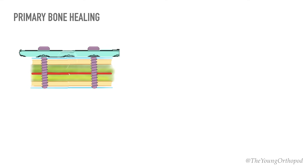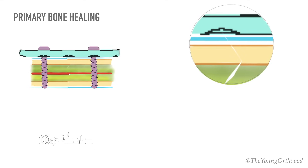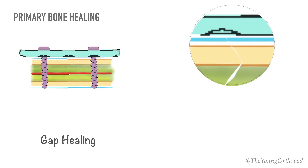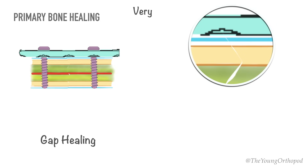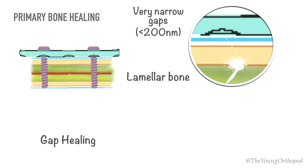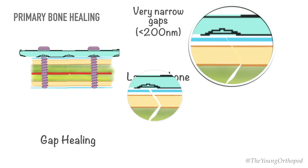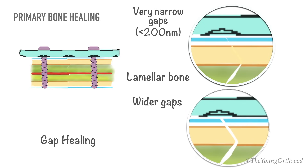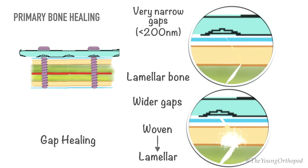The first pattern is gap healing. New capillaries and osteoprogenitor cells growing in from the fracture edges fill the gap, and new bone is laid down on the exposed surface. In very narrow gaps, lamellar bone is formed directly. For wider gaps, woven bone is initially formed and then remodeled to lamellar bone.